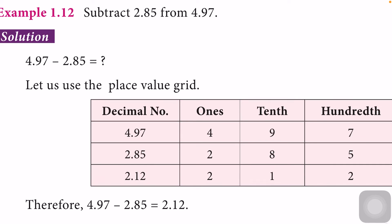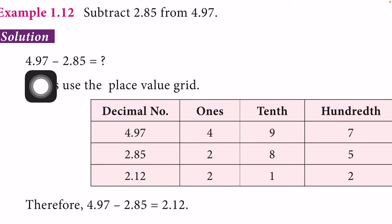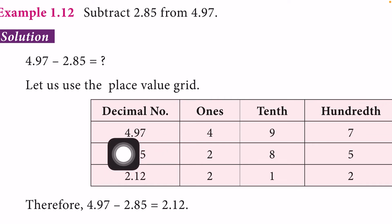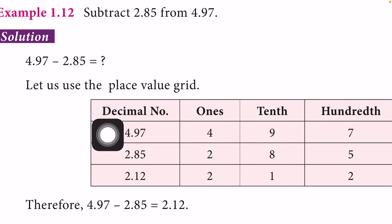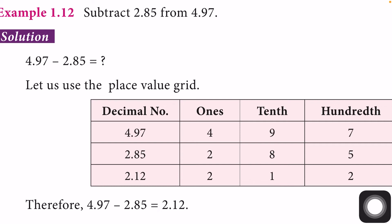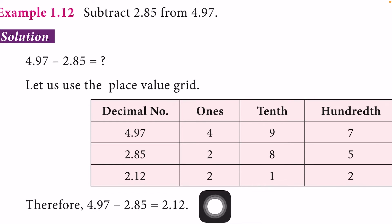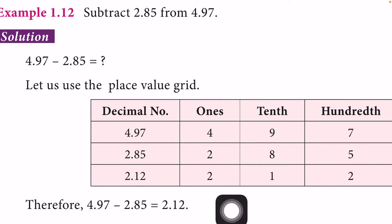Subtract 2.85 from 4.97. So 4.97 minus 2.85 equals what we have to find. Write 4.97 in the place value grid: 4 is in the ones place, 9 in the tenths place, 7 in the hundredths place. Then 2.85: 2 in the ones place, 8 in the tenths place, 5 in the hundredths place. Subtracting: 7 minus 5 is 2, 9 minus 8 is 1, 4 minus 2 is 2. The answer is 2.12.